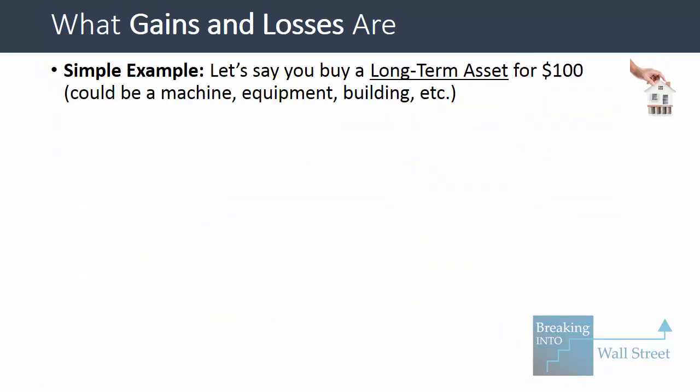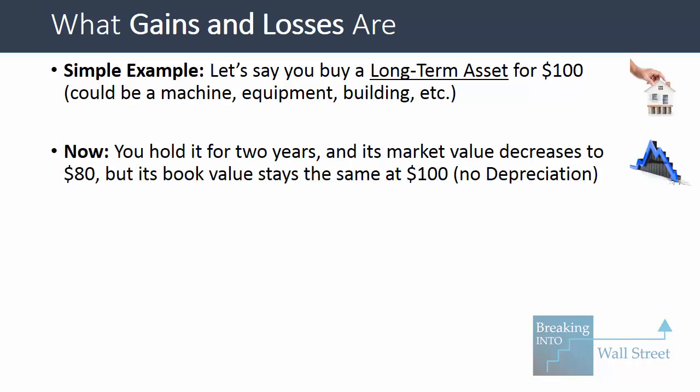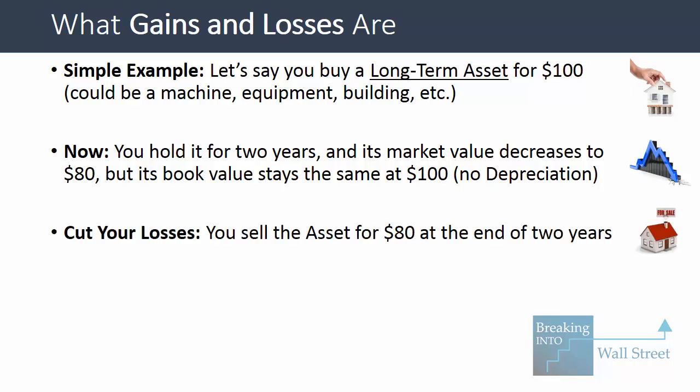This could come up, for example, if you buy a long-term asset such as a machine, a piece of equipment, or building for $100, then you hold it for two years. Its market value decreases to $80, but its book value stays the same at $100. Just to simplify this, we're going to assume no depreciation here, so let's say its book value stays at $100.